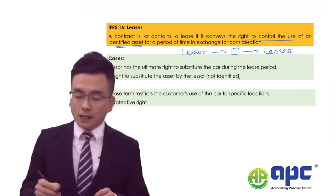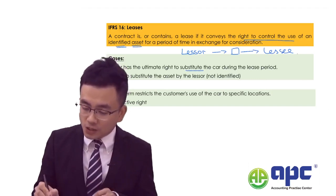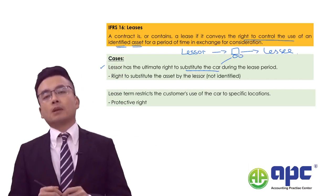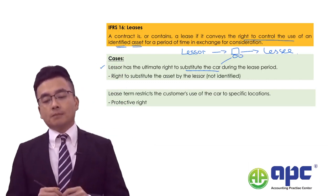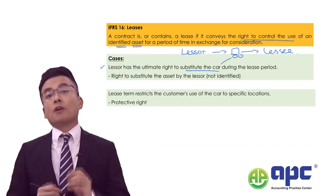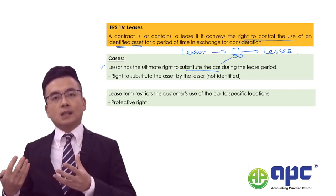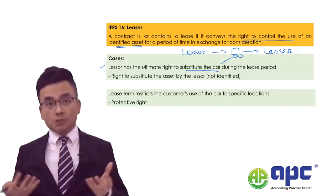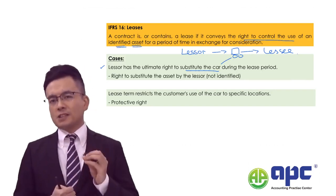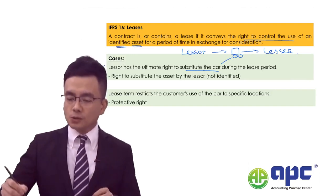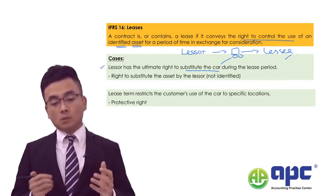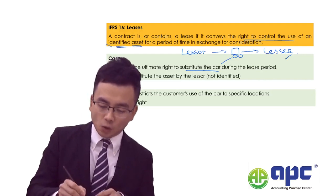If the lessor has the right to substitute that car during the lease period, then if the lessor wants to use this car today — although the car has been leased to the lessee — the lessor can substitute that car with another car. If that is the case, it will interrupt the use of the car by the lessee, and we can see that the asset is not identified.